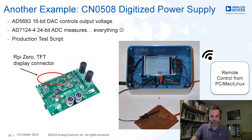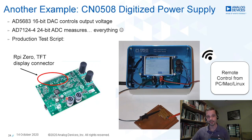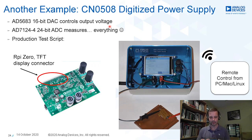Another example: stepping back to the slow, powerful world is Circuit Note 508, a digitized power supply. It uses the AD7124 ADC to measure everything — temperature of onboard voltage regulators, input voltages, output voltages, and output current. The output voltage is controlled with a 16-bit DAC. The result is a super flexible 75-watt power supply, all controlled by a Raspberry Pi Zero.